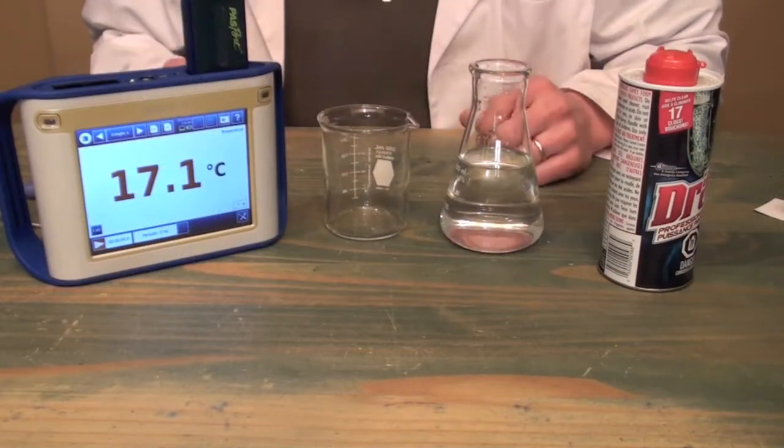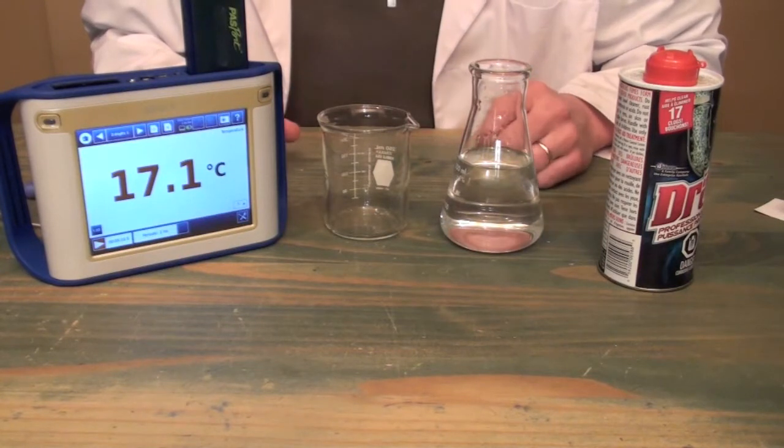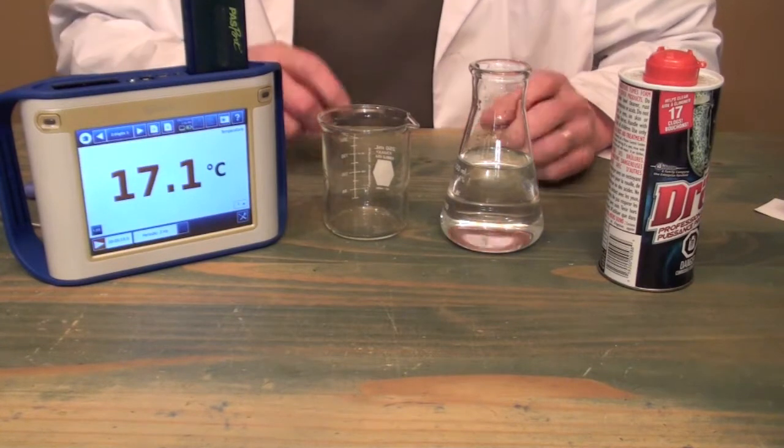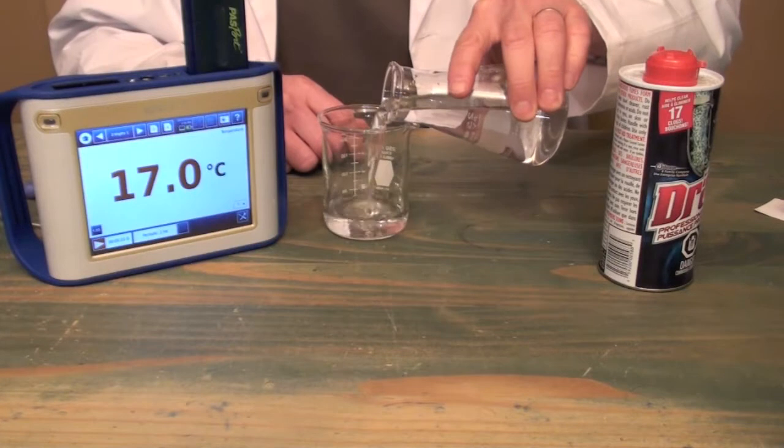In this experiment we're going to do a very short investigation of whether or not Drano produces an exothermic reaction when mixed with water. So in order to do that we're just going to add about a hundred milliliters of water to a beaker.